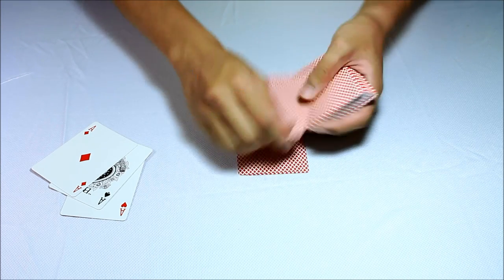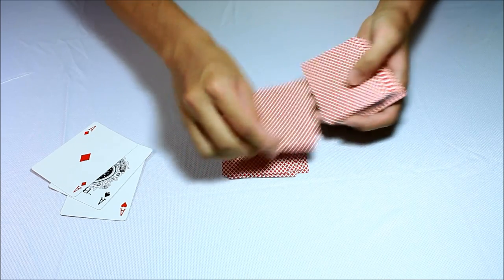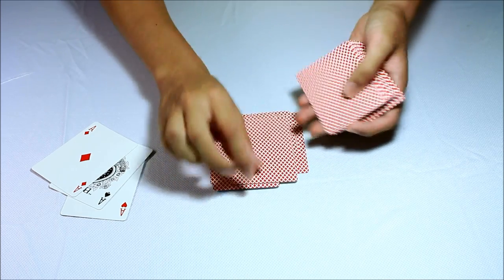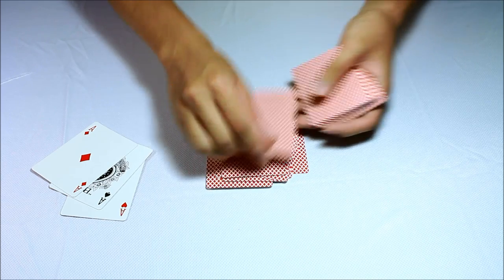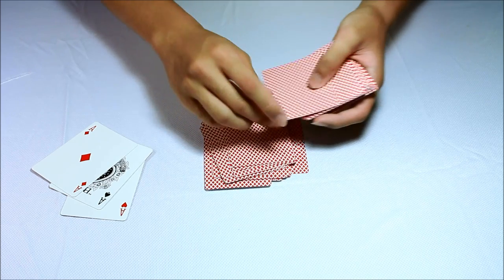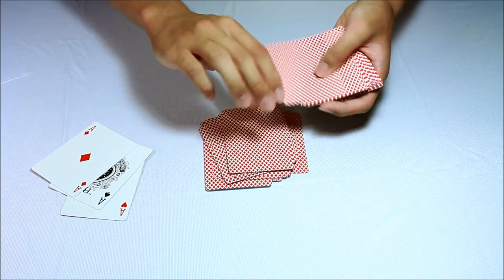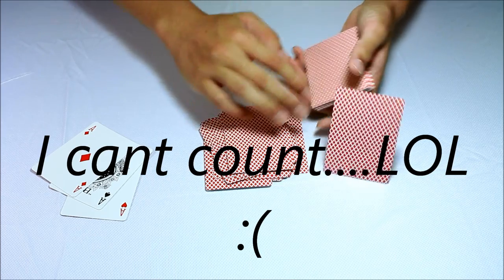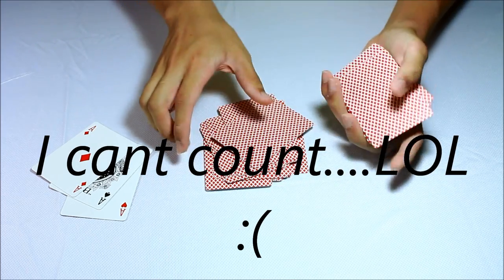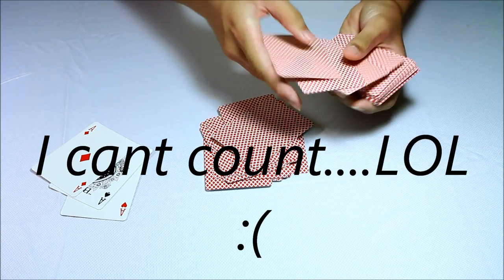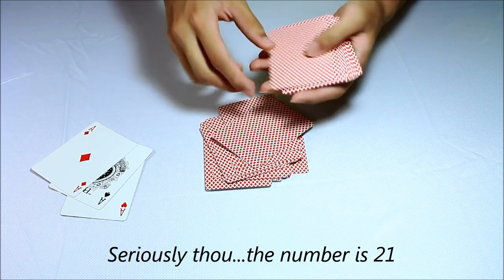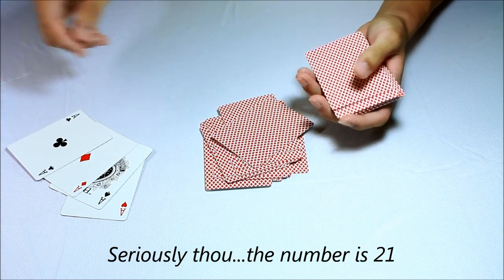So in countdown, 1, 2, 3, 4, 5, 6, 7, 8, 9, 10, 11, 12, 13, 14, 15, 16, 17, 18, 19, 20. I'll build up the suspense, and the 21st card should be the ace, which is right there. Yeah, so the 21st card, which is the ace.